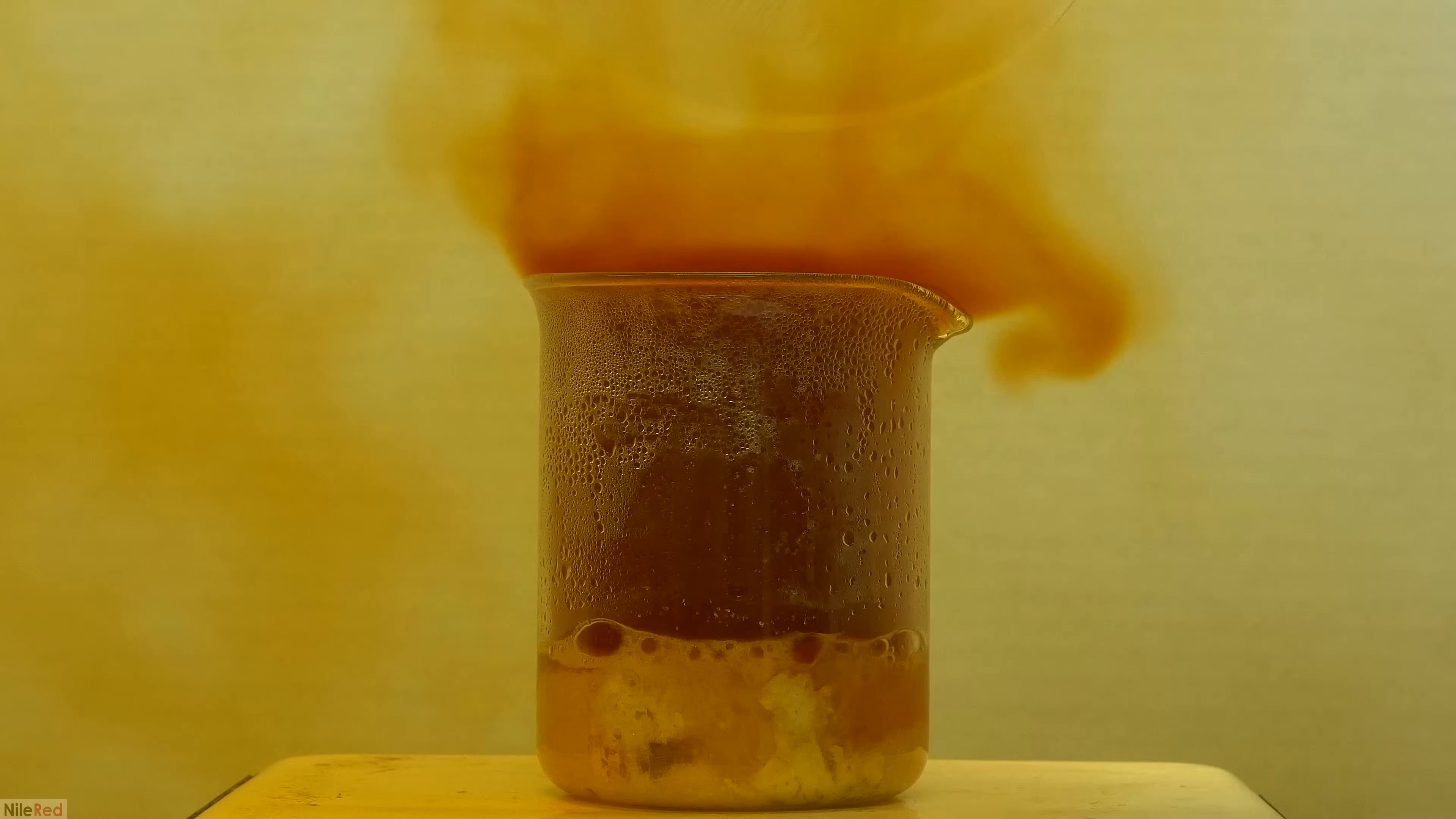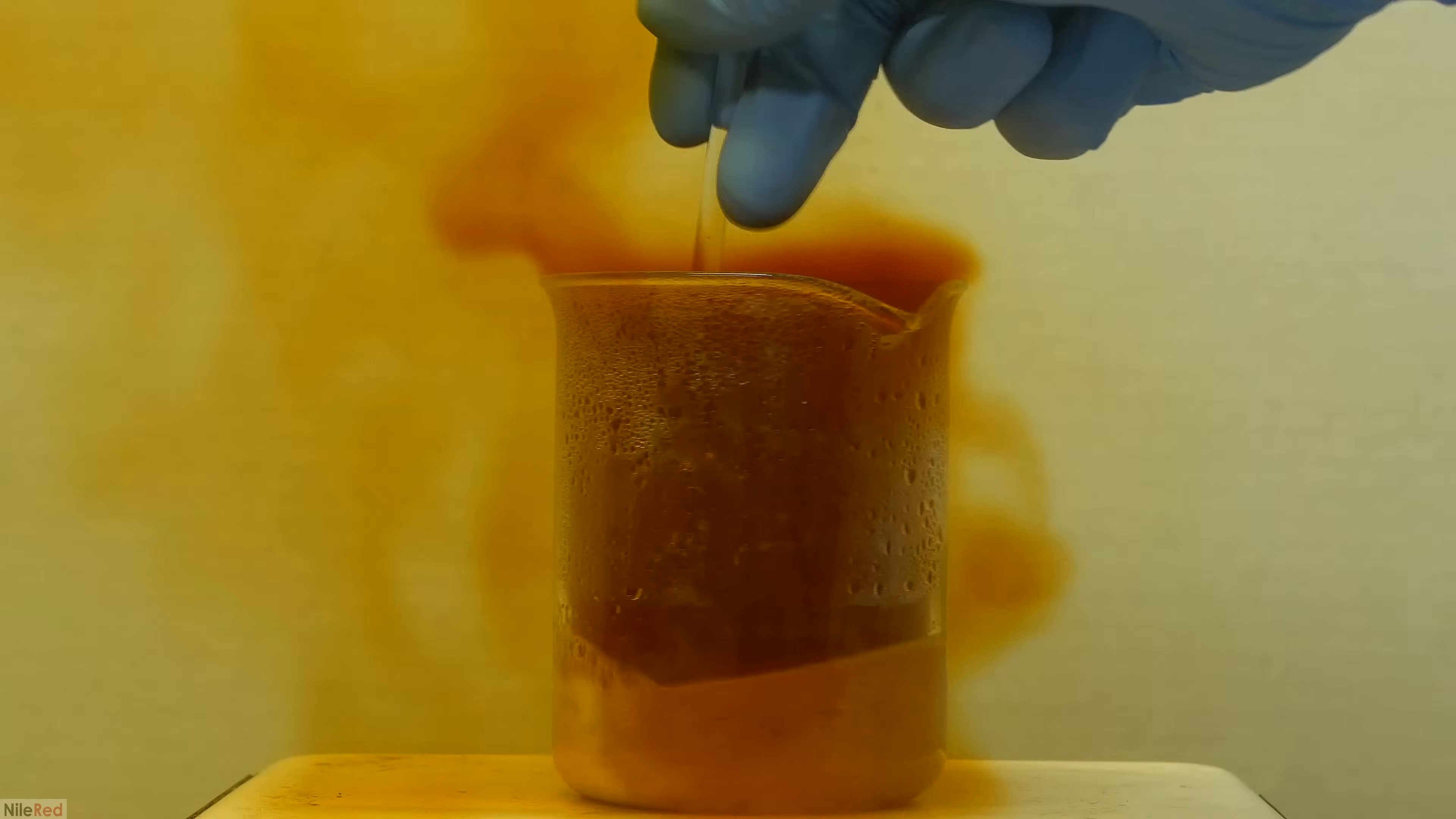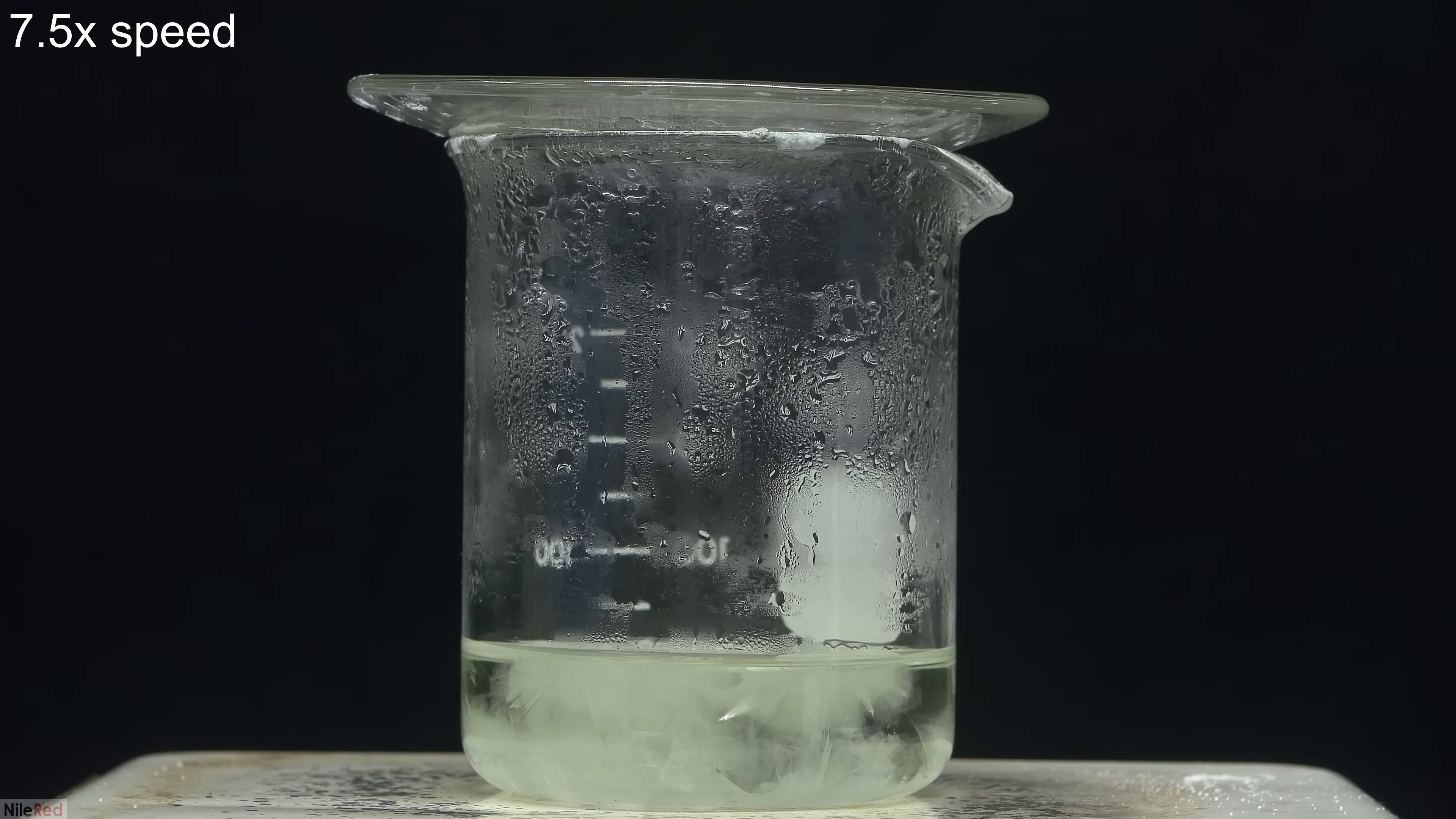In general, the process to make silver nitrate is pretty simple. The first thing we do is react silver metal with nitric acid to make a solution of silver nitrate. The water is removed by evaporation and this leaves behind our silver nitrate.